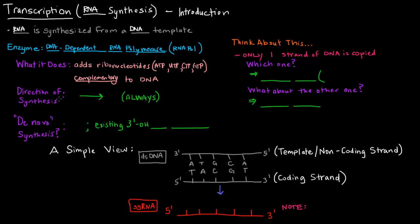What is the direction of the synthesis of the RNA? The direction of synthesis is 5' to 3', just like DNA replication. And this is always the case. RNA is synthesized 5' to 3', always.